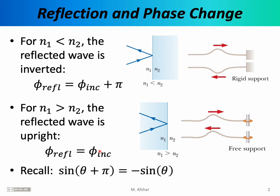Recall that sine of theta plus pi equals minus sine of theta — a fact from geometry. So when a wave is inverted or flipped upside down, the function is multiplied by negative one, and we describe that by a phase change of pi. When the phase constant does not change, the wave is not flipped upside down. When the phase constant changes by pi radians, the wave is inverted upon reflection. Whether we have a phase change or not depends on n1 and n2 — specifically, which one is bigger.